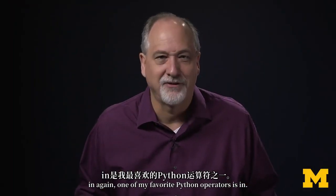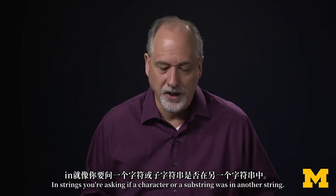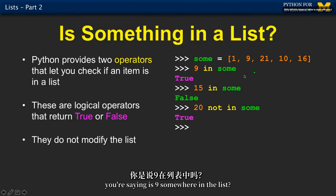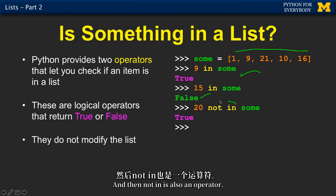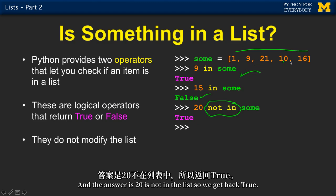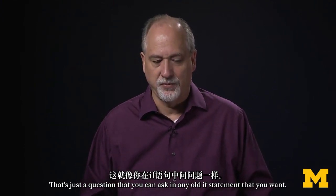One of my favorite Python operators is in. In strings, you're asking if a character or substring was in another string. Here, you're looking at the members of a list and asking: is 9 somewhere in the list? Yes, it is. Is 15 somewhere in the list? No, it is not. And not in is also an operator — it's the opposite of in. So is 20 not in the list? 20 is not in the list, so we get back true. It's just a question you can ask in any if statement.